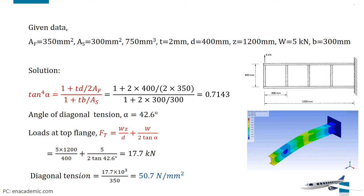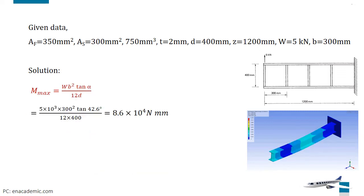In addition to this uniform compressive stress, local bending of the type shown in figure occurs. The local bending moment in the top flange at the built-in end is found using maximum bending moment expression. Write maximum bending moment M_max is equal to Wb²tanα/(12d).